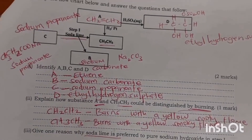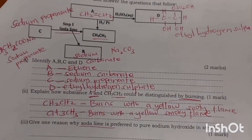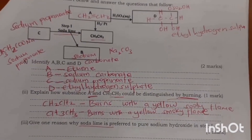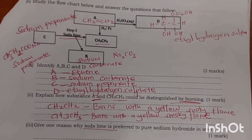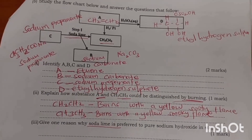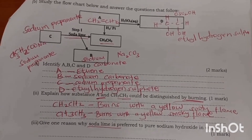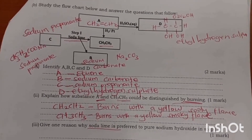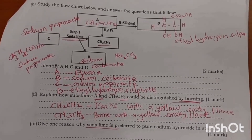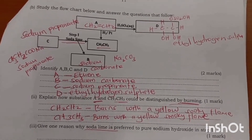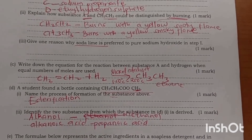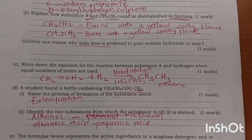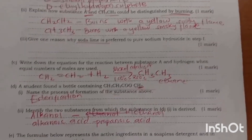You are supposed to identify A, B, C and D. A is ethene, B is sodium carbonate, C is sodium propanoate, D is ethyl hydrogen sulfate. Explain how substances A and D can be distinguished.